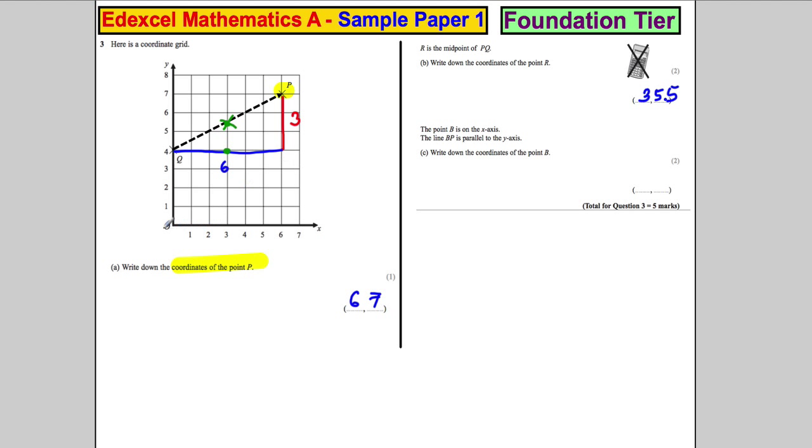The point B is on the x-axis. So the point B, I'll leave it there, is somewhere on the x-axis. The line BP is parallel to the y-axis. The line B to P is parallel to the y-axis. So for it to be parallel to this axis, it must be a straight vertical line. So where must B be?